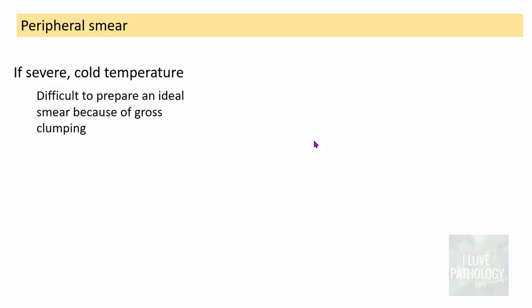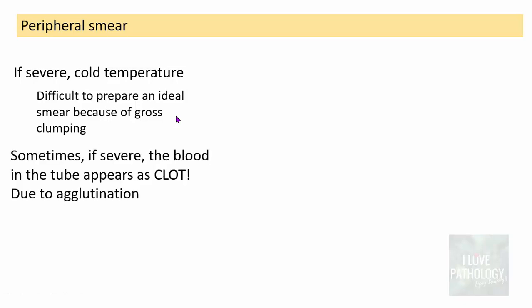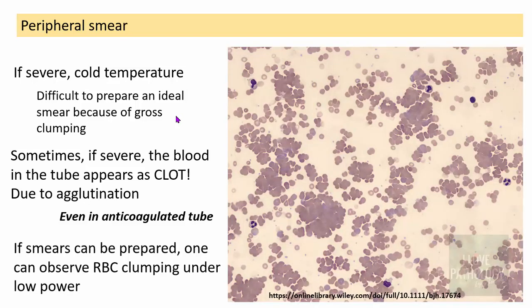Before preparing a peripheral smear in severely cold conditions, gross clumping makes it very difficult to prepare an ideal smear. Sometimes, if severe, blood in the tube appears as a clot due to agglutination — even in anticoagulated blood. If anticoagulated blood appears clotted, think cold antibody type hemolytic anemia. If smears can be prepared, large clumps of RBCs are visible even at low magnification — a very characteristic feature.